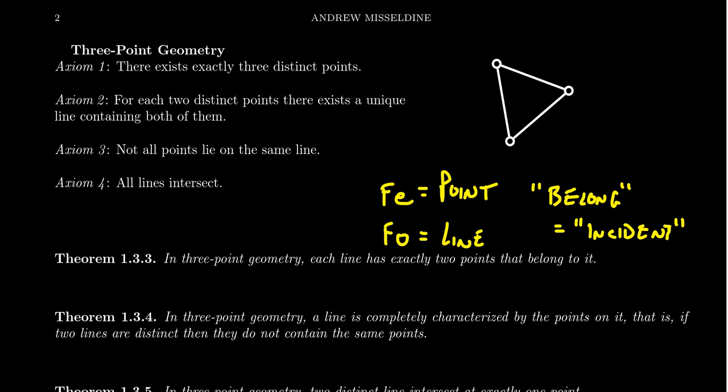Remember the axiomatic method: we first have undefined terms, then we have definitions, then we have axioms. The axioms come third on the list because they can use, in addition to the undefined terms, the definitions we've developed. Like in this case, the word intersect simplifies the axiom to: all lines intersect — given any two lines, there's at least one point on both of them. The fourth step of the axiomatic method is theorems. We proved four theorems for Fee-Foe theory. Now with three-point geometry, we're interpreting Fee as point and Foe as line, and all four theorems become theorems of our three-point geometry.